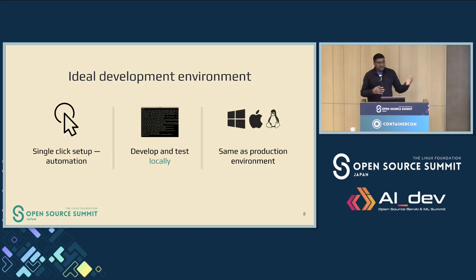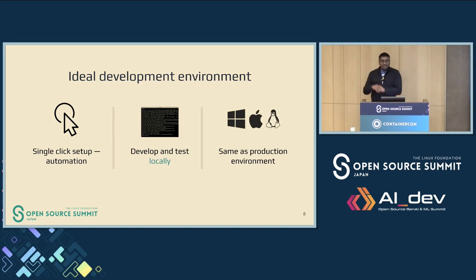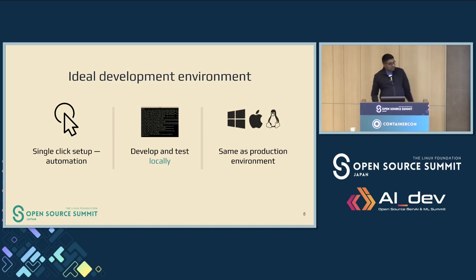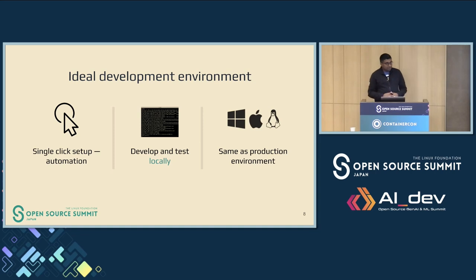Develop and test locally — that is more important. Say I'm given a Mac, Windows, or Linux machine, but eventually all our deployments happen on Linux or Kubernetes. The goal is one thing, but we might run it on different machines. Having flexibility around developing on the same environment makes our life easier. I work on a feature, it works on my Mac, but when we deploy it on a production server, it says it doesn't work. We want to develop and test locally, and more importantly, in the same production environment.